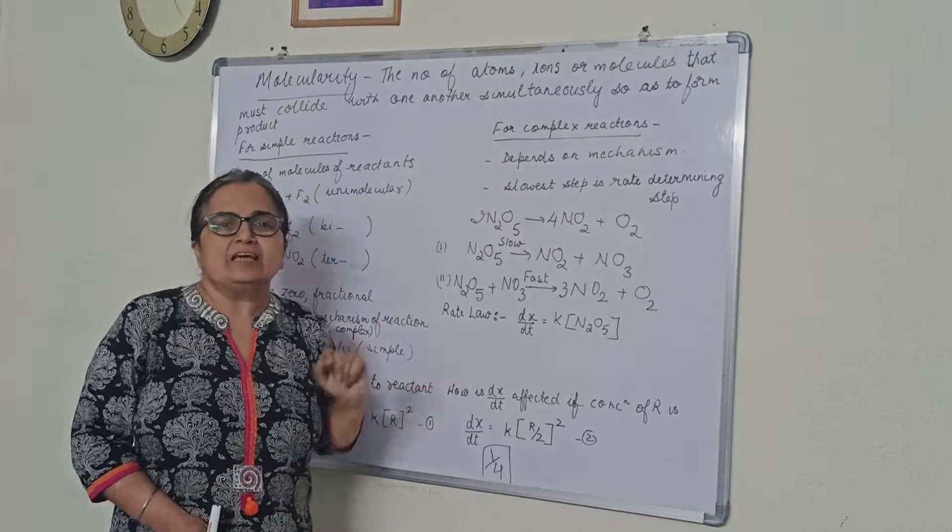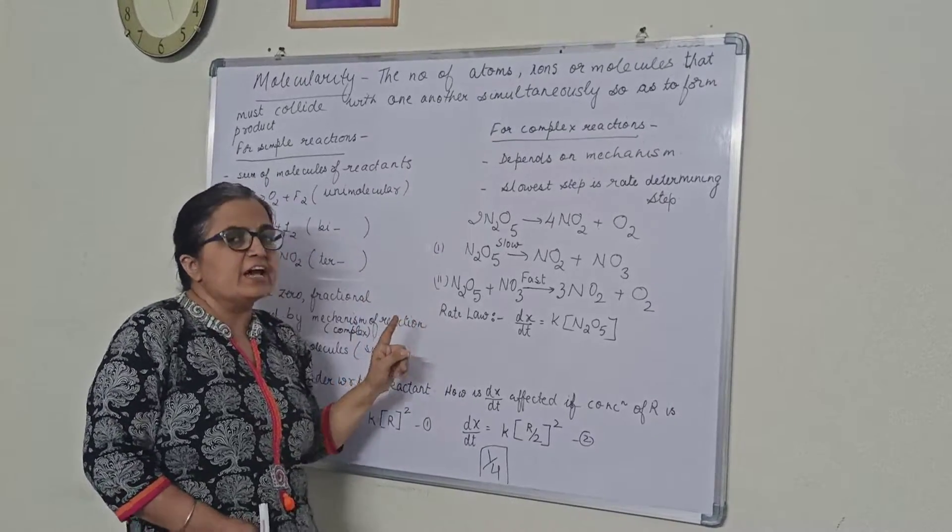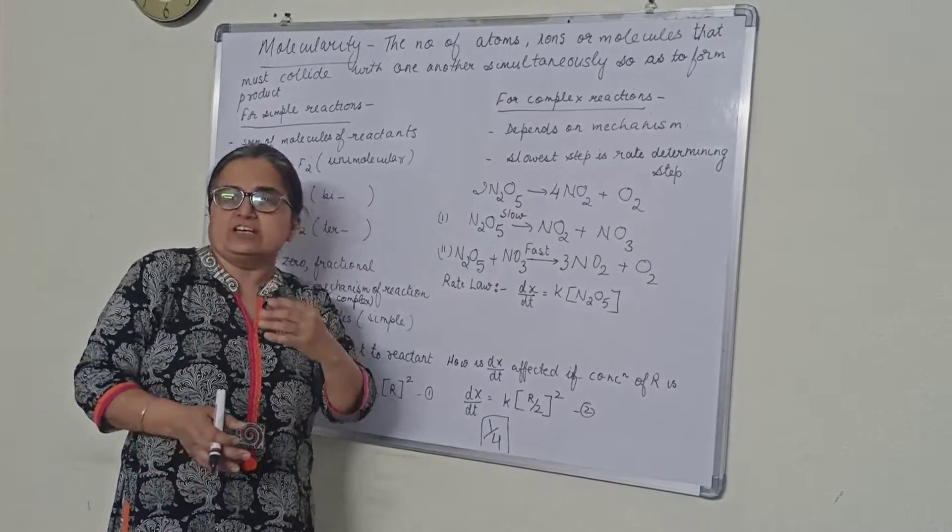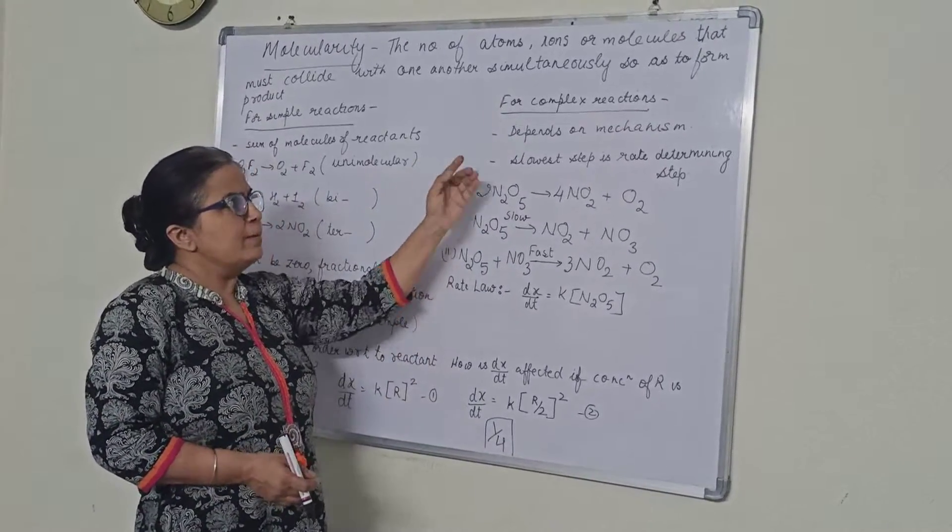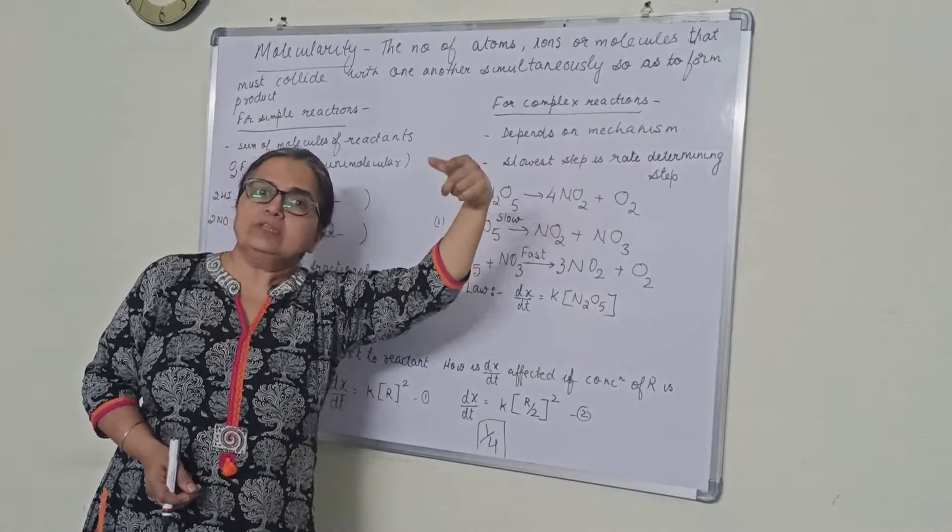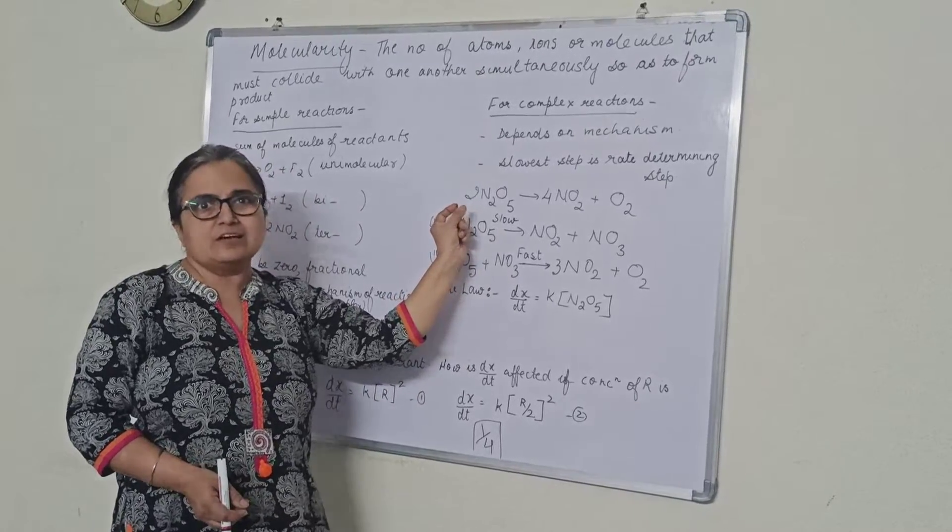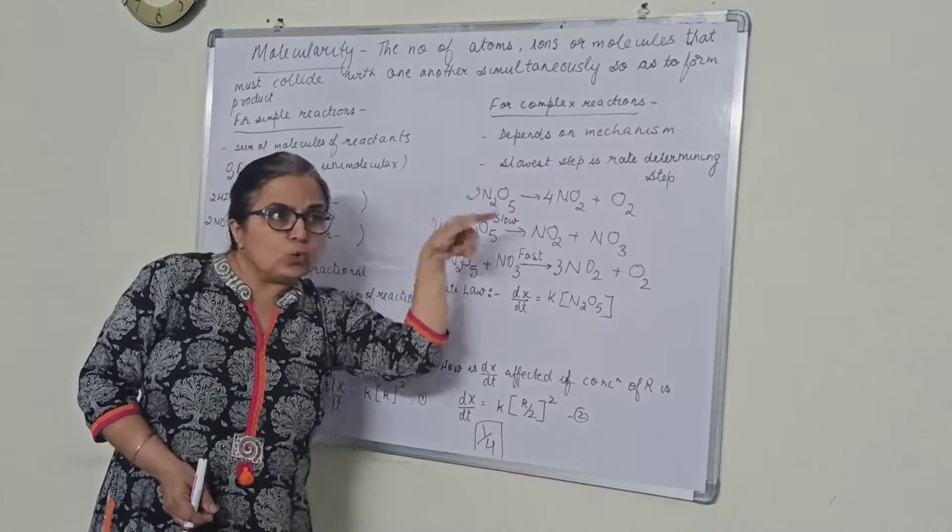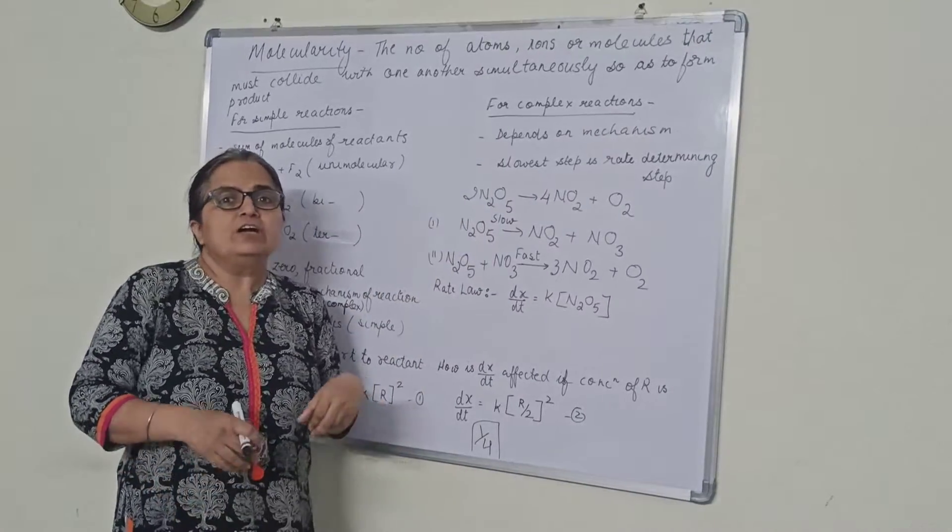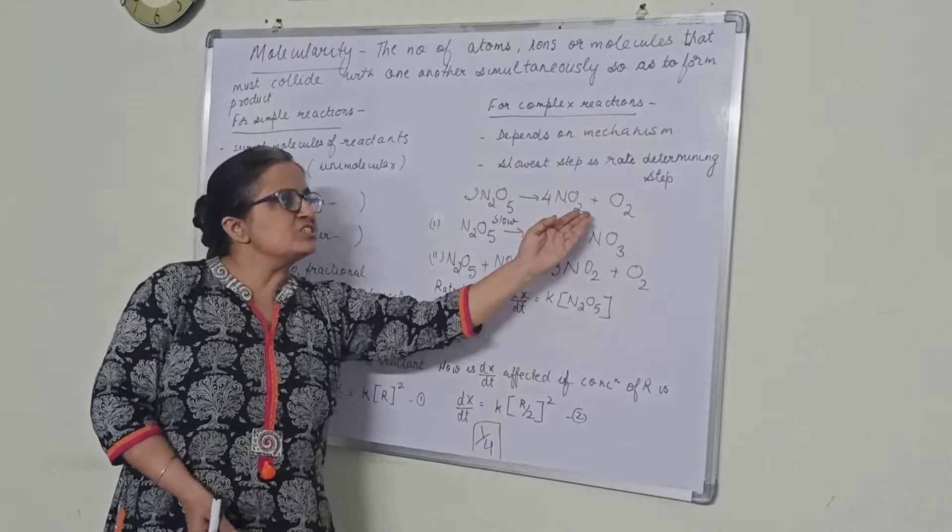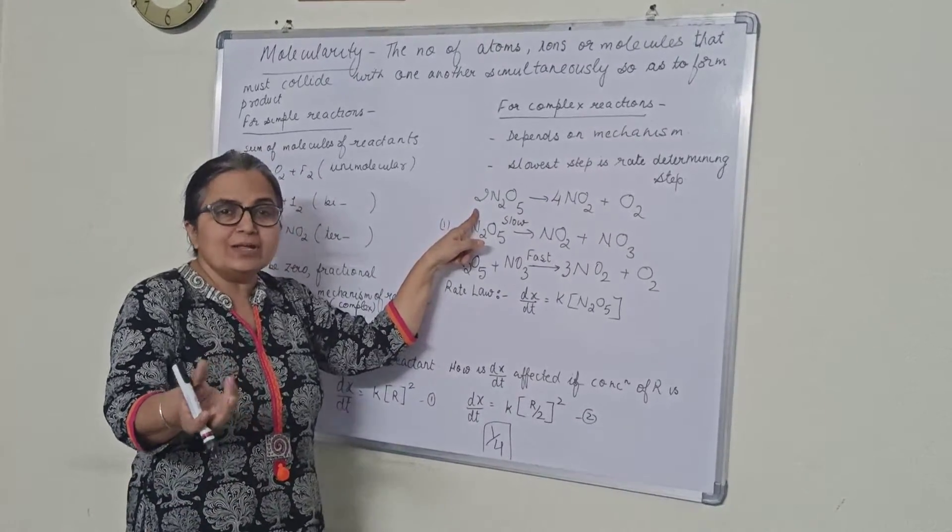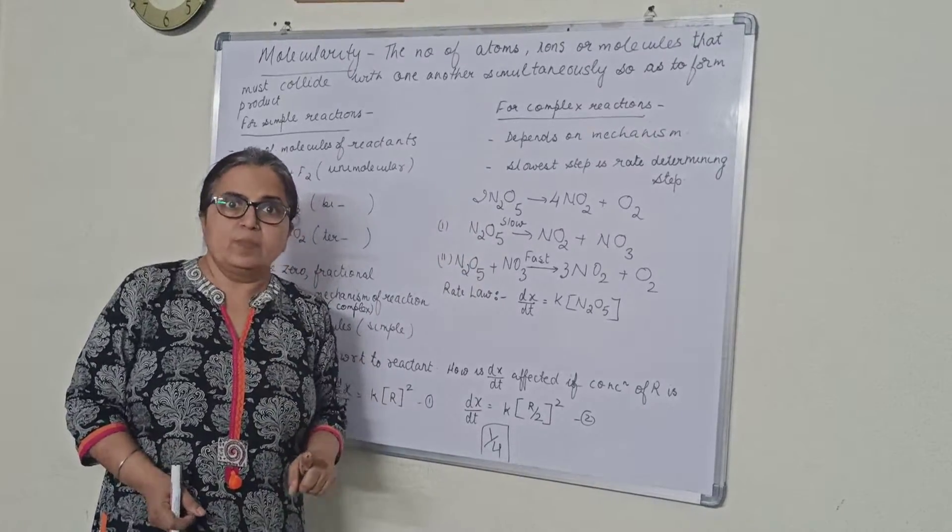If it is a complex reaction, then we have to see the mechanism. Mechanism means in how many steps the reaction is taking place. For a complex reaction, we say the molecularity depends upon the mechanism, not as many reactants are specifying. The slowest step is the rate determining step.